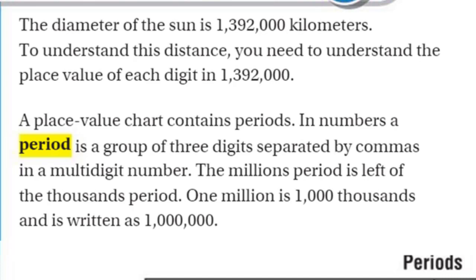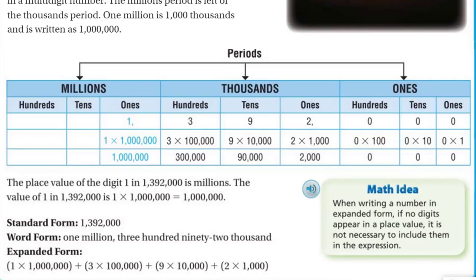Let's move down to our chart. Here we have our periods — the millions, the thousands, the ones. Underneath each one: in the millions, you have hundreds, tens, and ones. Thousands, you have hundreds, tens, and ones. And under ones, you have hundreds, tens, and ones.